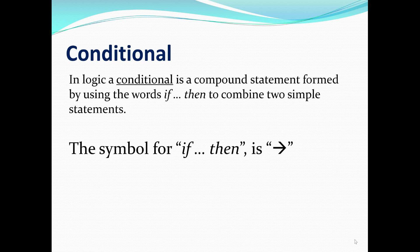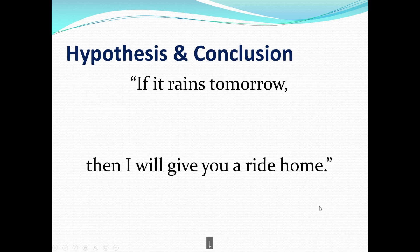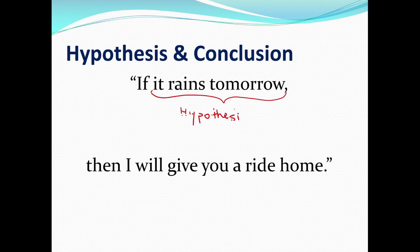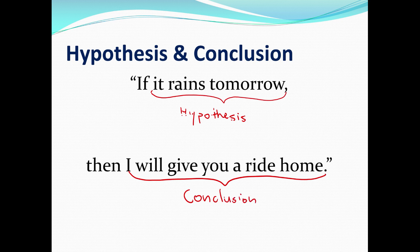Conditional statements have a hypothesis and a conclusion. Taking 'if it rains tomorrow, then I will give you a ride home': 'it rains tomorrow' is the hypothesis, and 'I will give you a ride home' is the conclusion. Notice that 'if' is not part of the hypothesis and 'then' is not part of the conclusion. We will use the terms hypothesis and conclusion when generating the truth table for conditional statements.